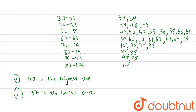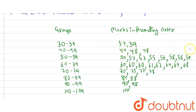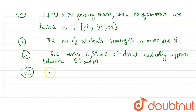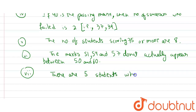The seventh and last part: how many have scored less than 50? Counting: 37, 39, 44, 48, 48 — that's five students. There are five students who have scored less than 50. Thank you.